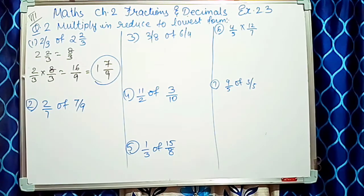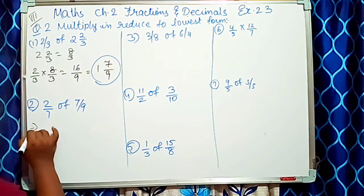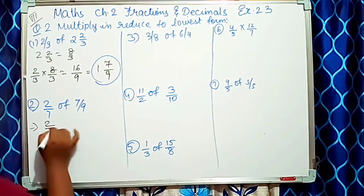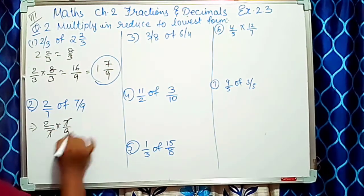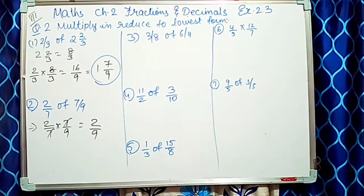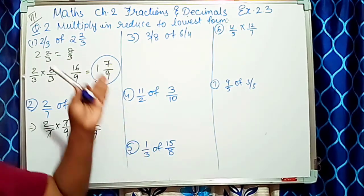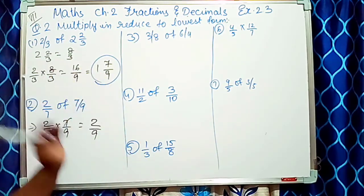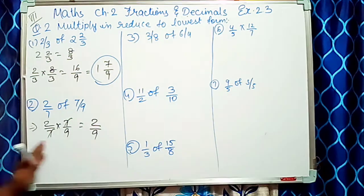Second sum dekho: 2/7 into 7/9. Yahan 7 aur 7 cancel ho jaate hain, toh answer aata hai 2/9. Is mein mix fraction banana zaroori nahin tha — answer direct 2/9 hai.